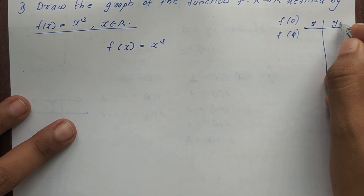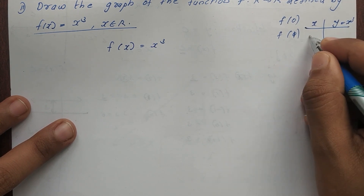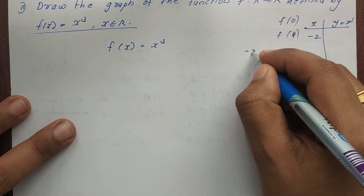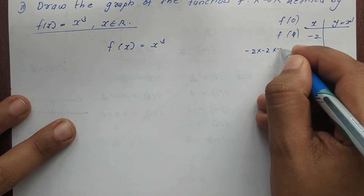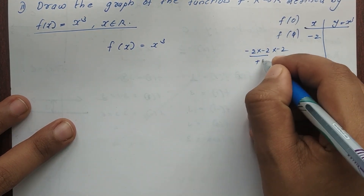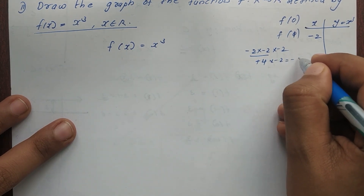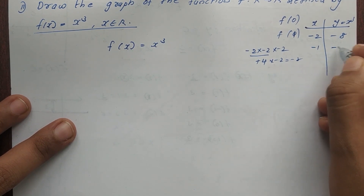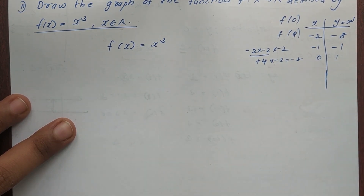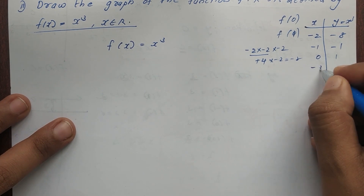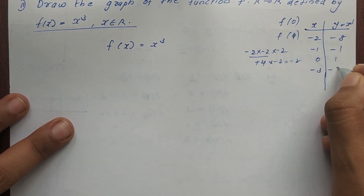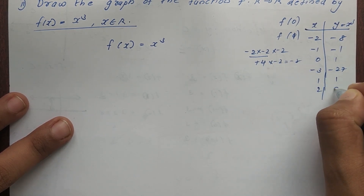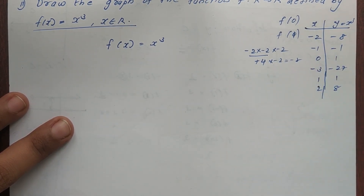I will add x equals minus 2. Now minus 2 cubed is minus 2 times minus 2 times minus 2. That is plus 4 times minus 2, which is minus 8. Then minus 1 gives minus 1. Zero gives 0. Minus 3 gives minus 27. Then 1 gives 1. 2 gives 8. And 3 gives 27.